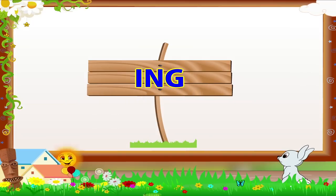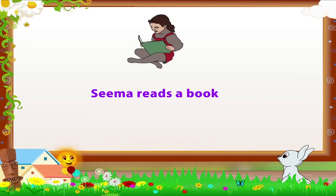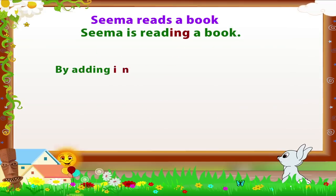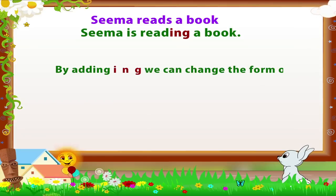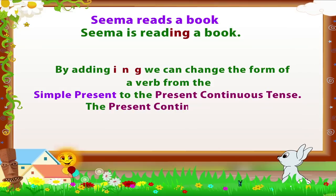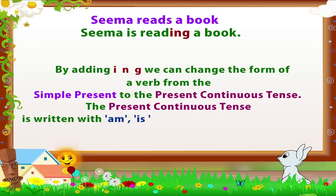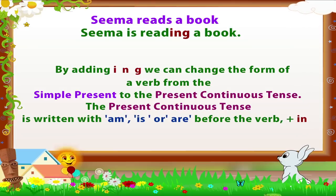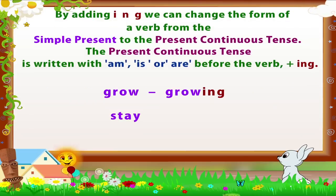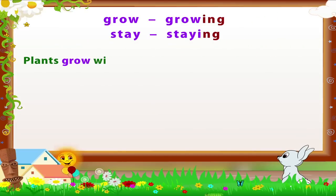Now, Rainbow, let us see what happens if we add -ing to a verb. 'Seema reads a book' becomes 'Seema is reading a book.' By adding -ing, we can change the form of a verb from the simple present to the present continuous tense. The present continuous tense is written with 'am', 'is', or 'are' before the verb plus -ing.